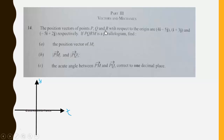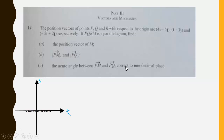The position vectors of points P, Q, and R with respect to the origin are 4i − 5j, i + 3j, and −5i + 2j respectively. If PQRM is a parallelogram, find: (a) the position vector of M, (b) the magnitude of vector PM and PQ, and (c) the acute angle between PM and PQ, correct to one decimal place.